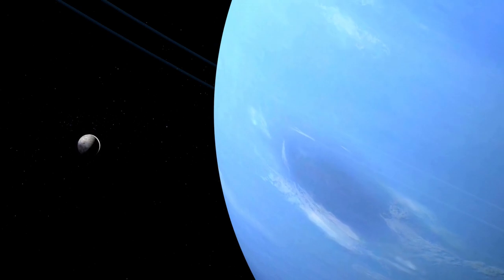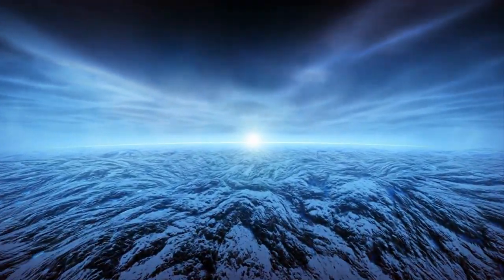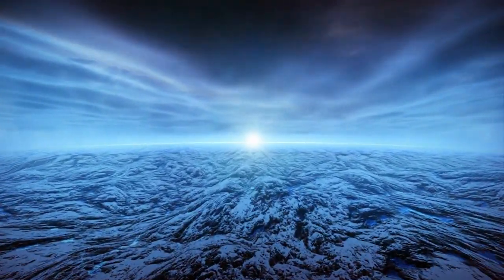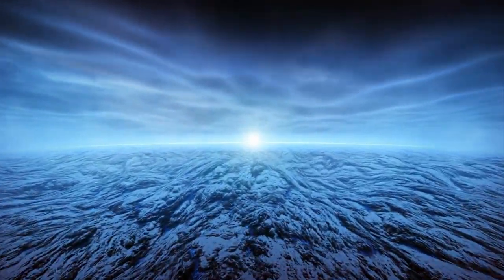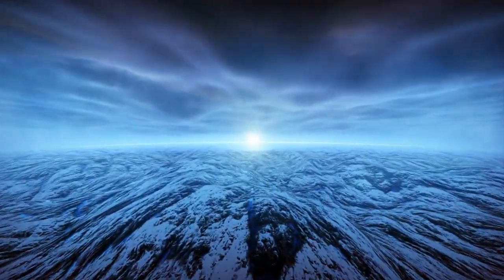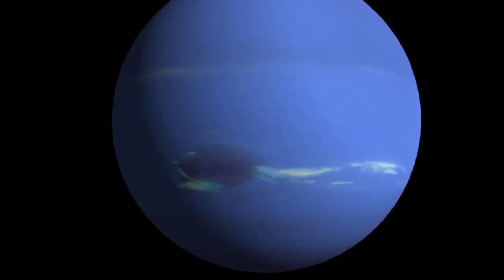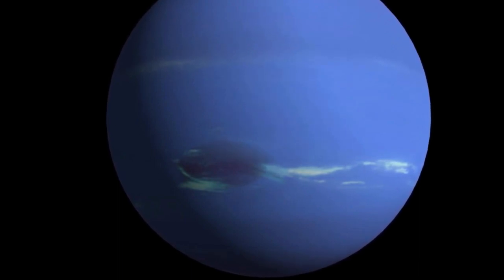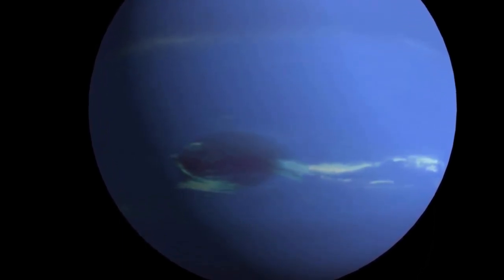However, Triton is slowly spiraling inward towards the planet and is expected to eventually be destroyed by tidal forces. Neptune is the windiest planet in the solar system, with winds that can reach speeds of over 1,200 miles per hour or 2,000 kilometers per hour. Neptune's Great Dark Spot, a massive storm similar to Jupiter's Great Red Spot, disappeared in 1994 and has not been seen since.